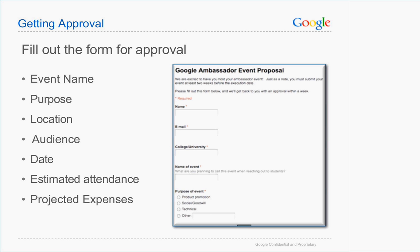For recruiting events, we're going to send university program specialists to campus. Work with the UP specialist listed in the Ambassador Contacts page and don't host recruiting events on your own. They may call on you to help spread the word or post posters. If you get recruiting questions, direct them to your university program's contacts. You can take resumes and pass strong ones to the specialist assigned to you, and they will follow up with candidates.